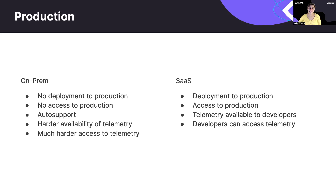In SaaS, we as developers deploy to production, which is both good and bad — we can cause a misconfiguration and trigger an outage, something we didn't have to worry about on-prem. But we also have access to production, with a lot of information and telemetry available to know how the software is running, and we can create all kinds of charts and dashboards to monitor it.